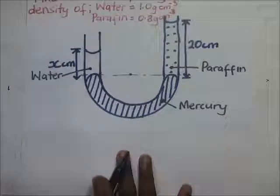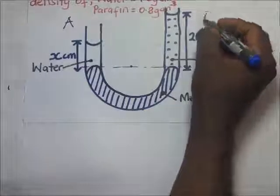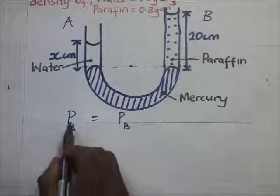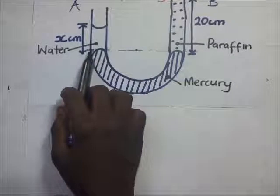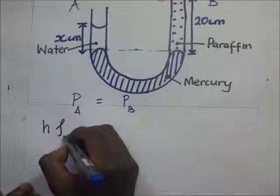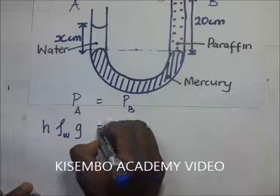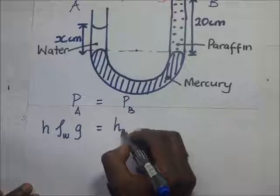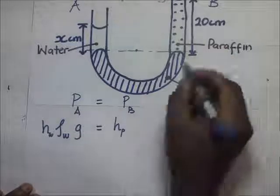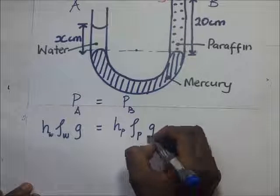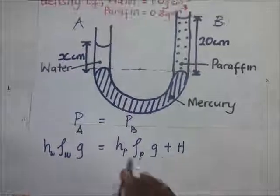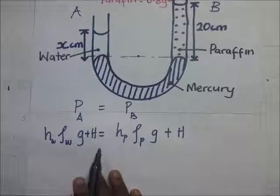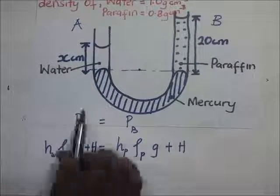Let's call this side A and this side B. Pressure at side A equals pressure at side B. Pressure at side A is the pressure of this column of water: height times density of water times gravity. That equals the pressure of the paraffin column: height of paraffin times density of paraffin times gravity, plus atmospheric pressure H on both sides.